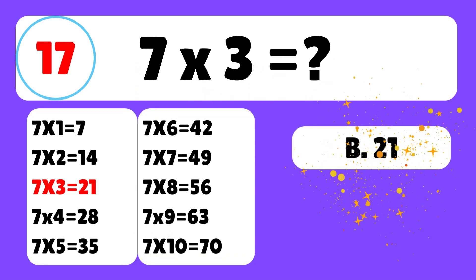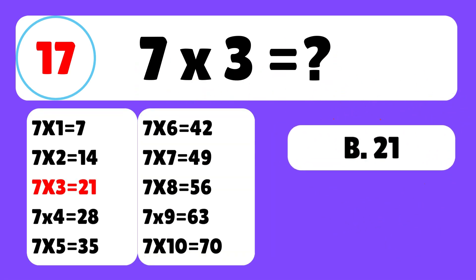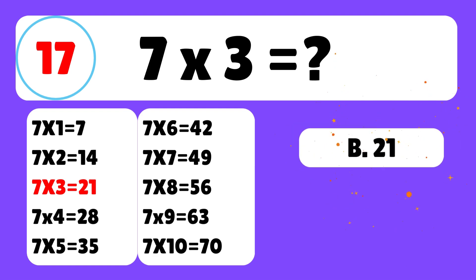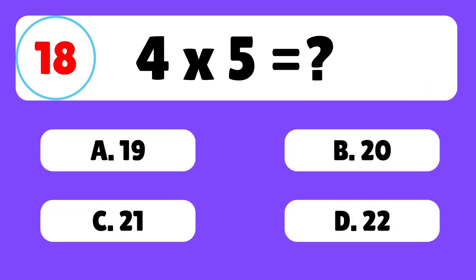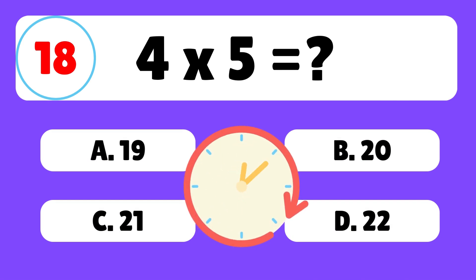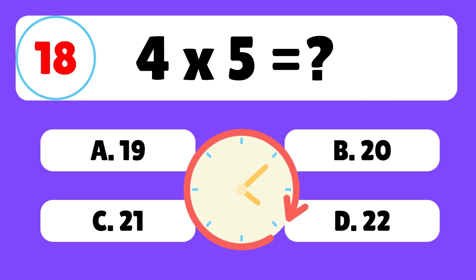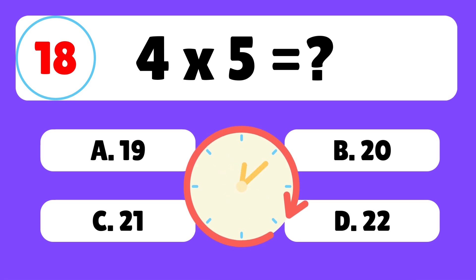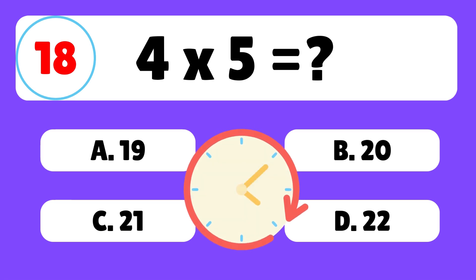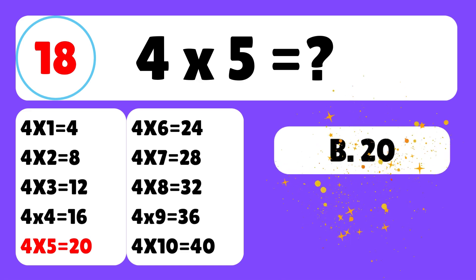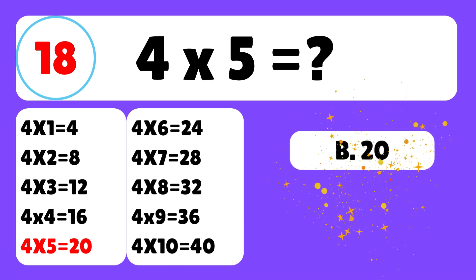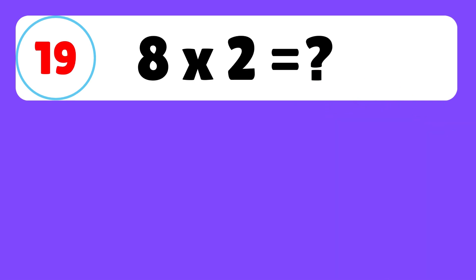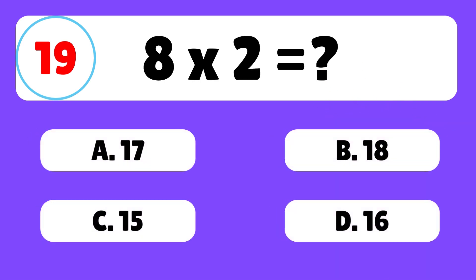Question seventeen: what is seven times three? The answer is B — seven times three is equal to twenty-one. Question eighteen: what is four times five? The correct answer is B — four times five is equal to twenty.